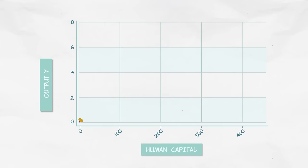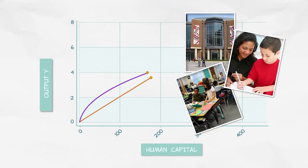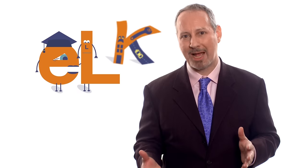Moreover, it takes a lot of investment in schools and universities and time and effort to build human capital. At some point, we're going to need all of that investment just to keep the population as educated as it is now. So the accumulation of capital, whether it's physical capital or human capital, can only get us so far.